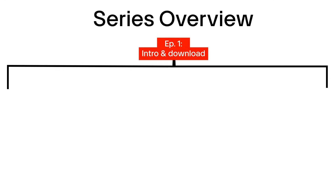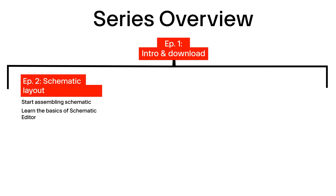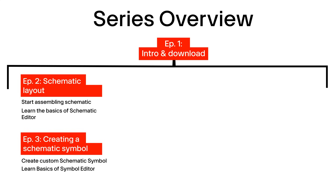Let's go over the steps we'll cover in this series. We'll start putting our schematic together in the Schematic Editor program, using symbols in KeyCAD's library. The Schematic Editor is where we tell which symbol pins to connect to other pins in the circuit. These connections are also called nets.